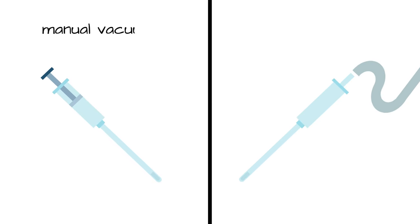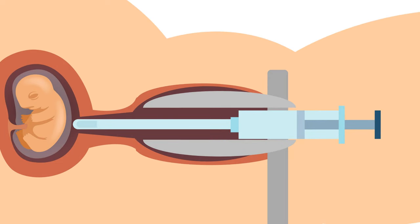The first is manual vacuum aspiration. The second is machine vacuum aspiration. To perform a manual vacuum aspiration abortion, also called an MVA abortion, an abortionist uses the suction of a syringe to remove the baby from the mother's uterus.